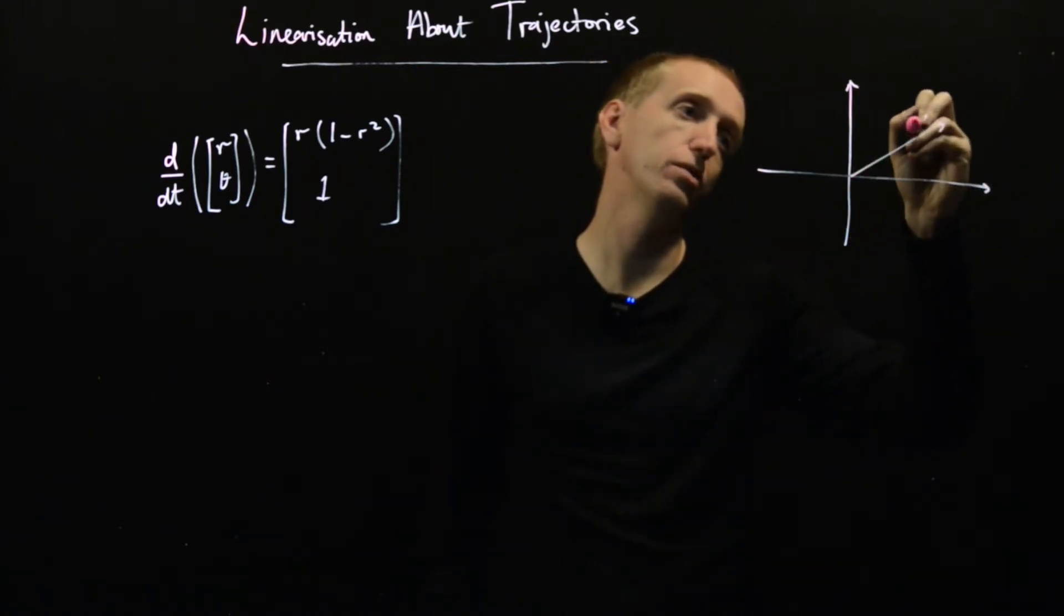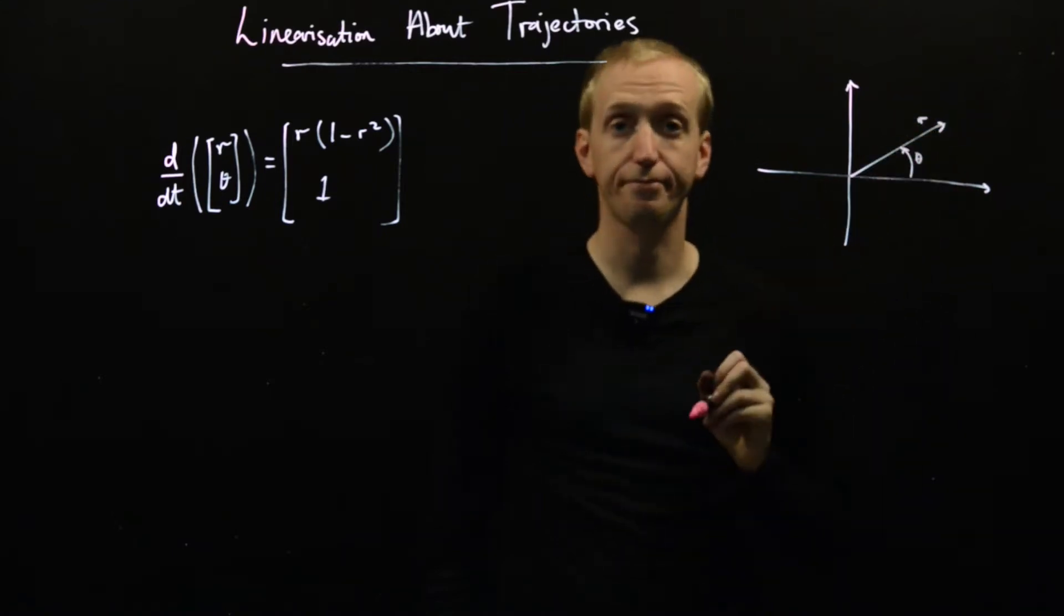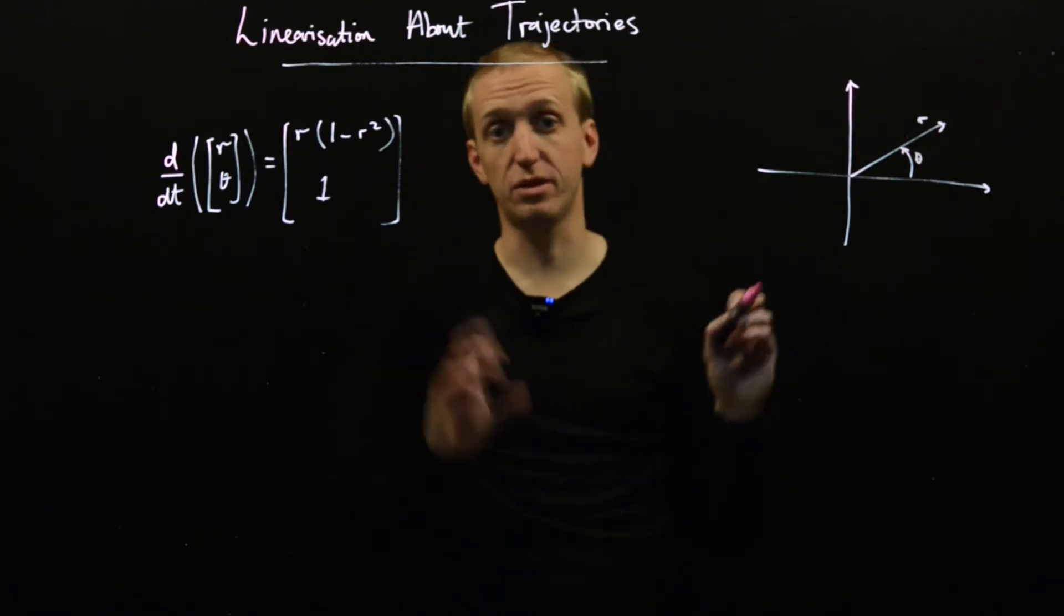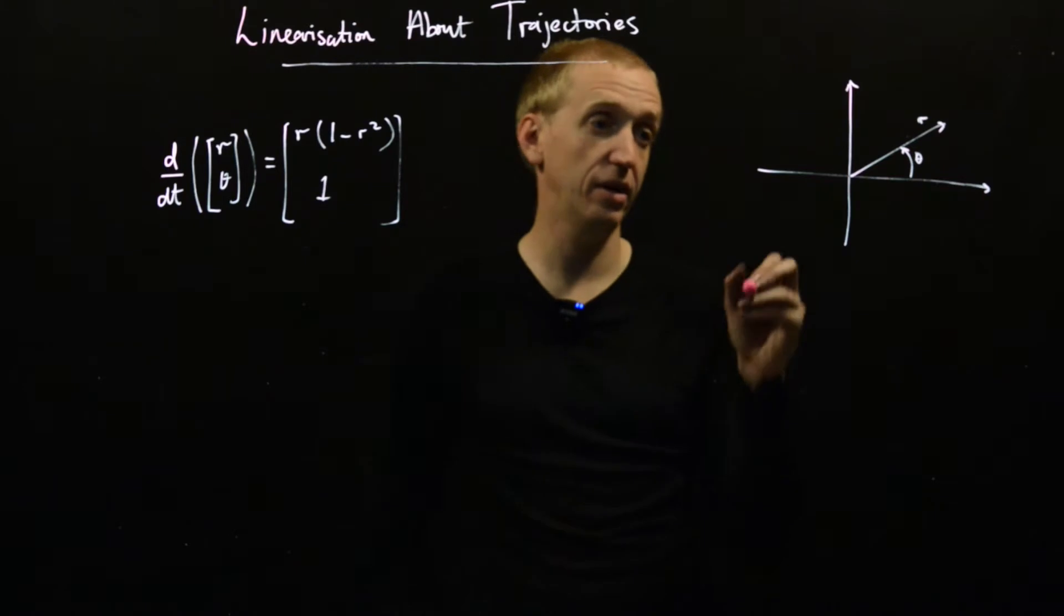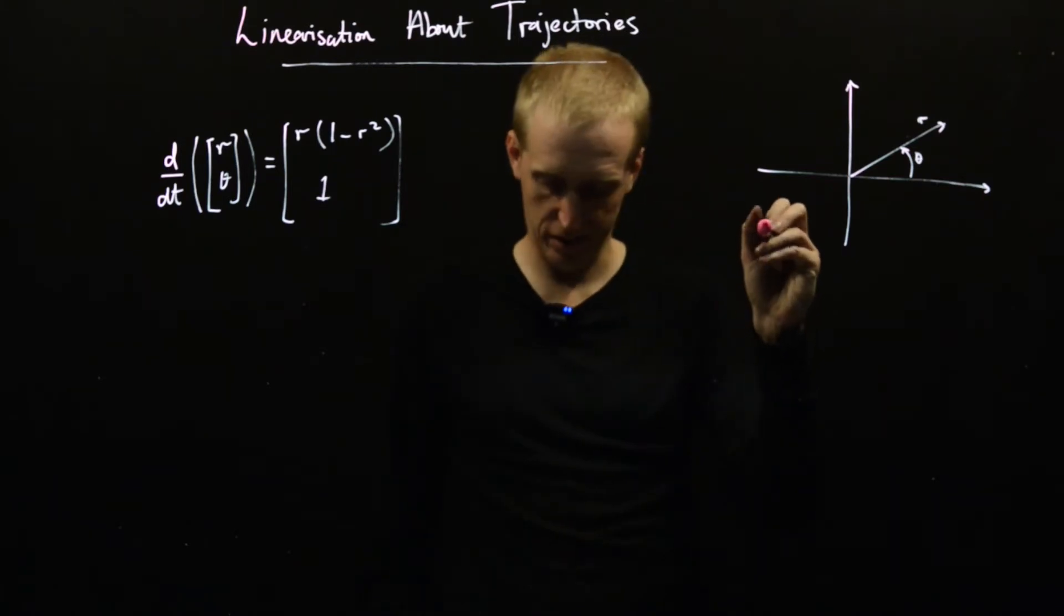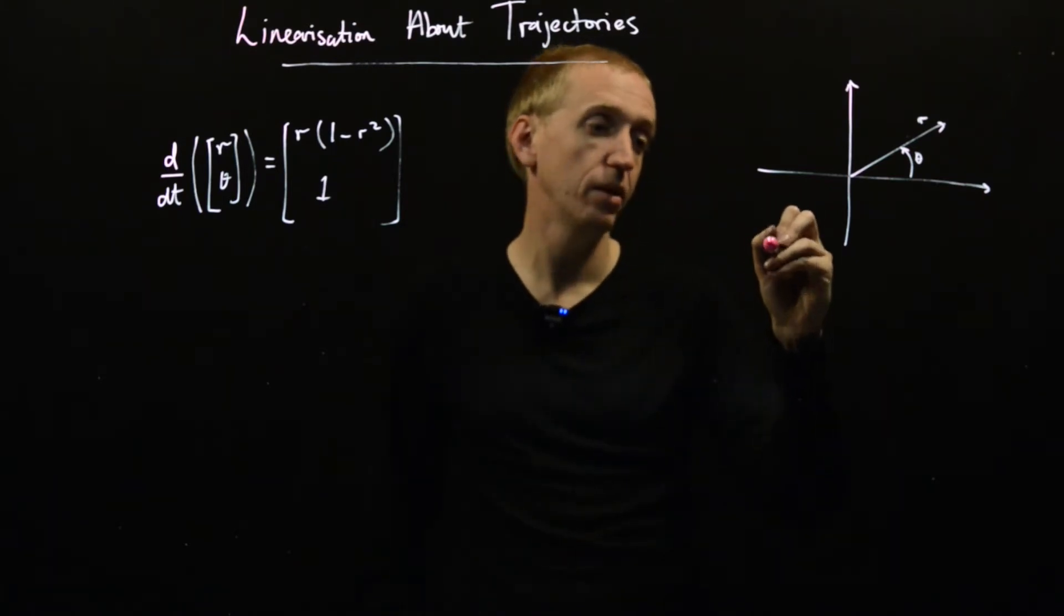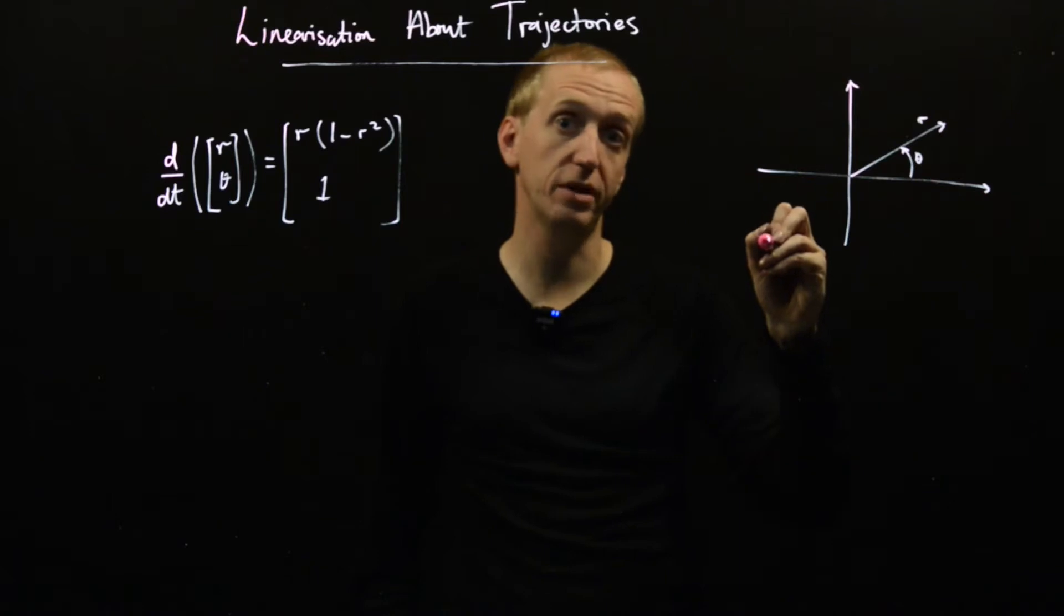If we draw things in normal Cartesian coordinates like this, our polar coordinates are r and theta. We can just simulate our system and build up our phase portrait in the usual way. It turns out that if we start off here, our initial condition corresponds to this point.